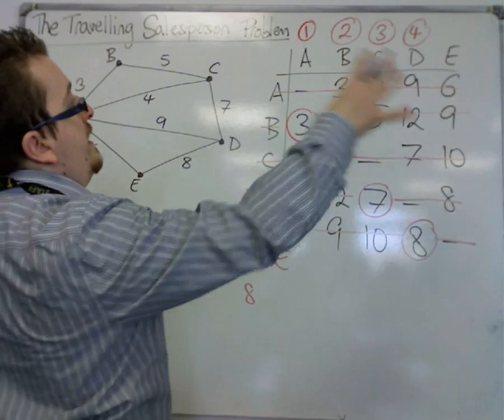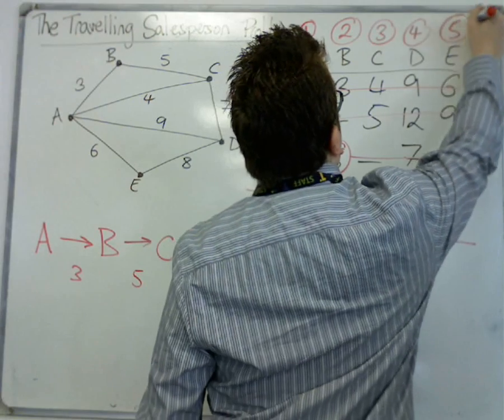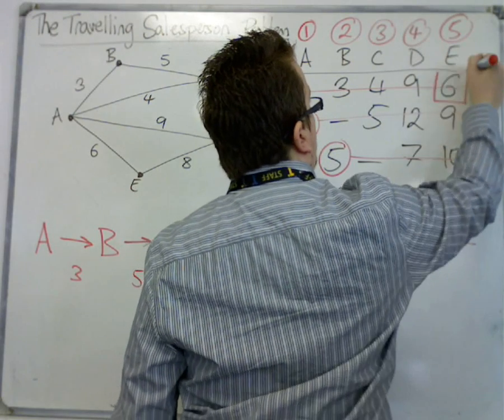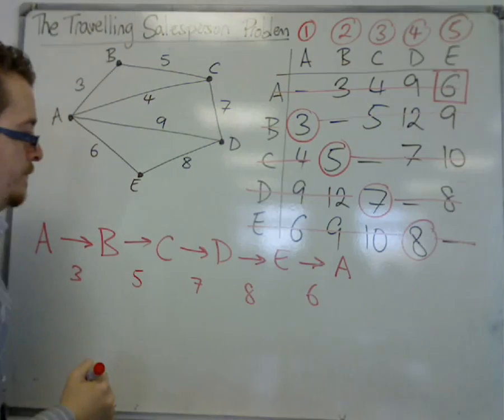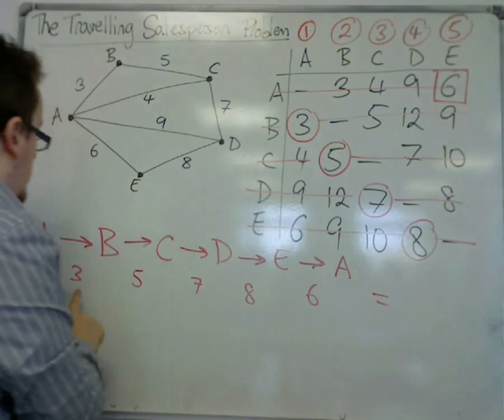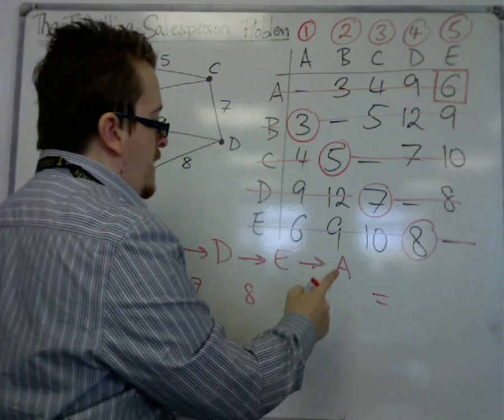And then, from E, I need to get back to A. That gets me back to A. So adding up, 3, 8, 15, 23, 29.